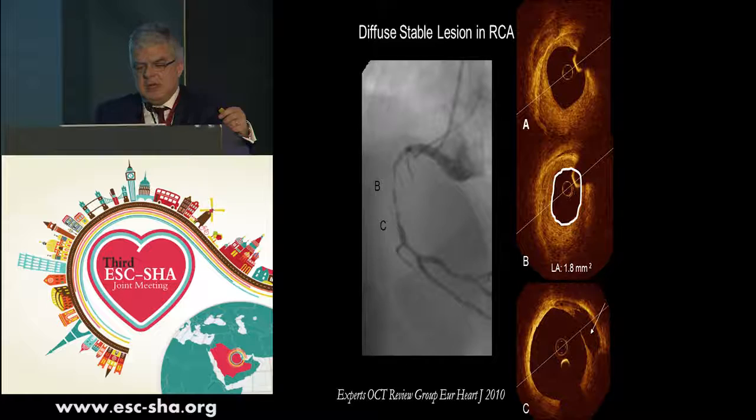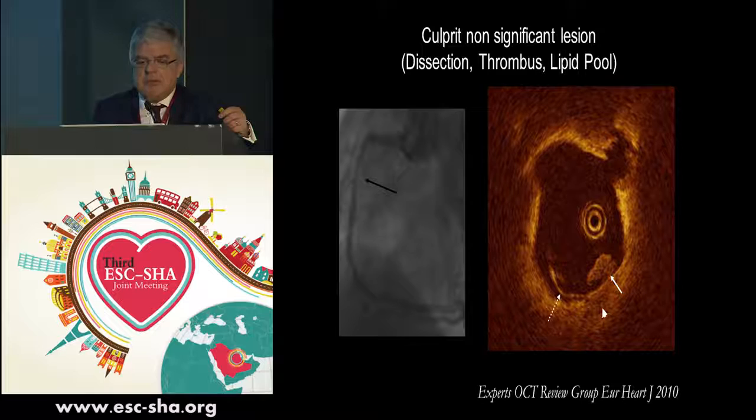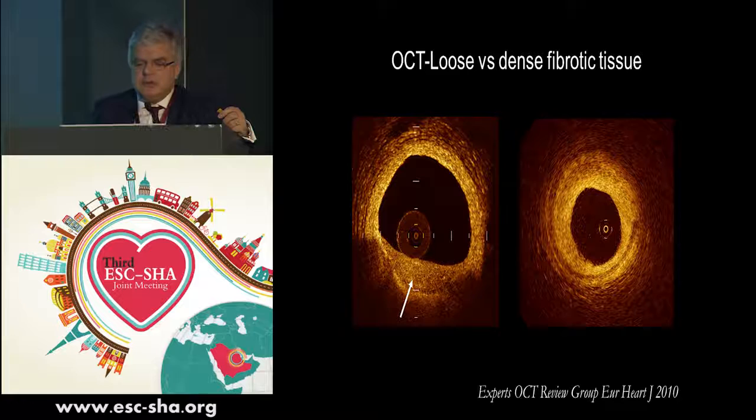OCT can demonstrate neovascularization in the adventitia, which you can nicely see here, and also demonstrate the type of lesion observed — like this example of a diffuse stable lesion in the right coronary artery, where you can track the entire lesion along the vessel. It can show culprit non-significant lesions, dissections, thrombus, and lipid pools in the same vessel, or distinguish loose versus dense fibrotic tissue, again because of the very high resolution.